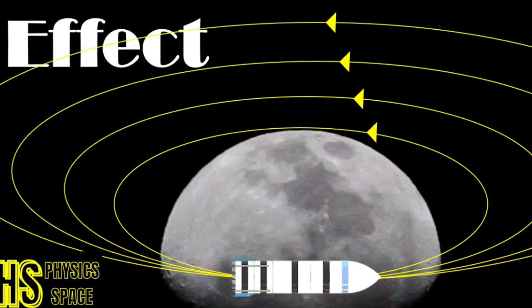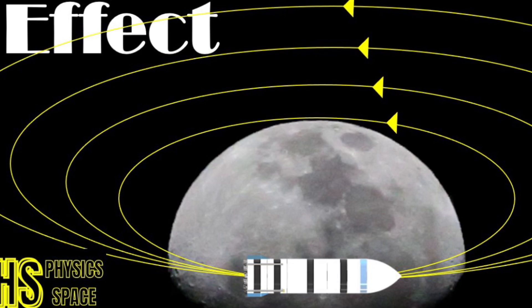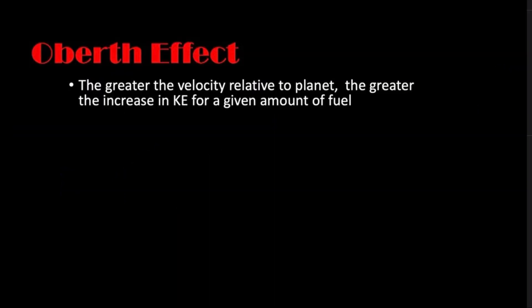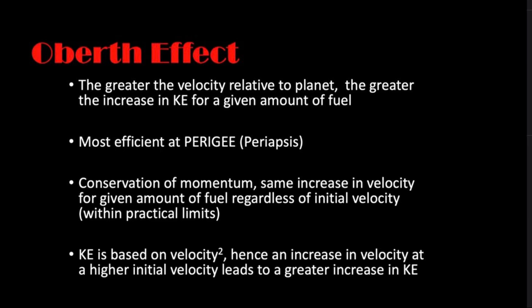Now first of all, we just need to define the Oberth effect and a couple of things about elliptical orbits. So simply put, the Oberth effect is the effect where the greater the velocity of a spacecraft relative to the planet, the greater the increase in kinetic energy, hence total energy, for a given amount of fuel, for a given amount of delta v.